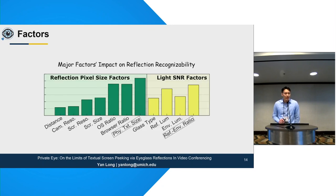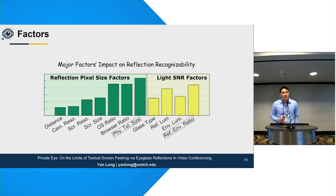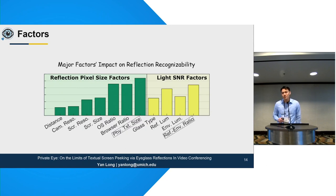We managed to characterize the many factors into two categories. The first category includes those that mainly affect the reflection pixel size the adversary gets in the digital image — such as the distance between the glass and the screen, and camera resolution. We provide a fully quantitative model that helps you calculate the reflection pixel size if you know these factors.